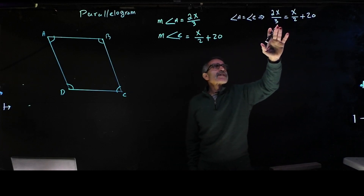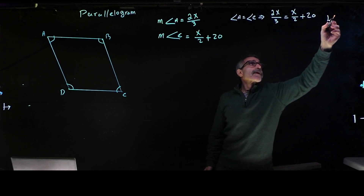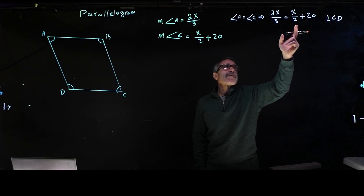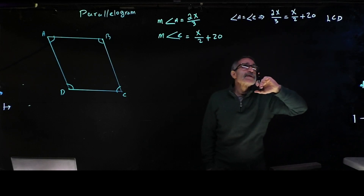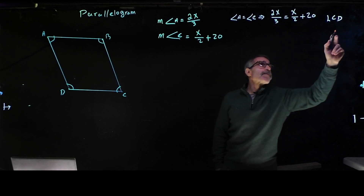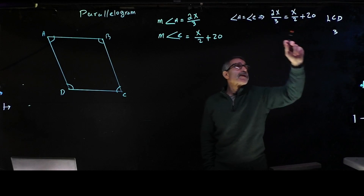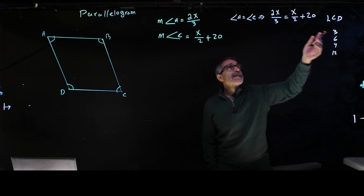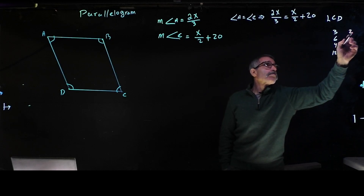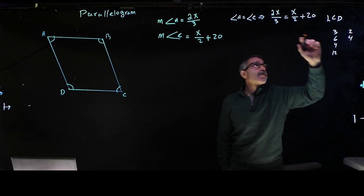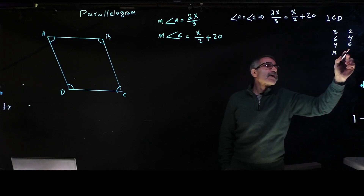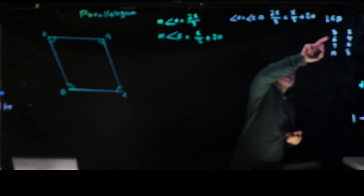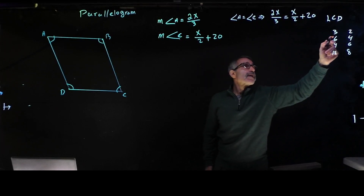When we have something like that with a fraction, we use a term called LCD — least common denominator. That means the lowest common denominator that fits both numbers. The multiples of 3 are 3, 6, 9, 12. The multiples of 2 are 2, 4, 6, 8. The number that fits both of them is 6 — that's the lowest one. So let's use number 6.